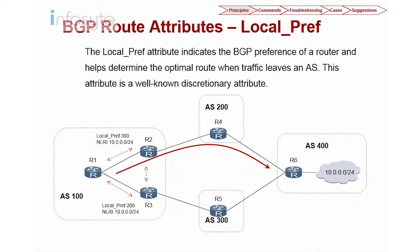Let's examine the local preference route attribute. The local preference attribute indicates the BGP preference of a router and helps determine the optimum route when traffic leaves an AS. In other words, local preference is used within IBGP — for example, in AS100 where R1 and R2, and R1 and R3 are IBGP neighbors. It only influences IBGP to determine how to exit your AS. So if R1 wants to exit AS100, it is going to use local preference.